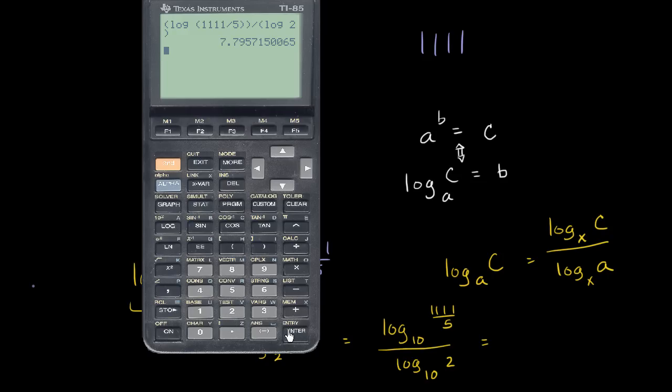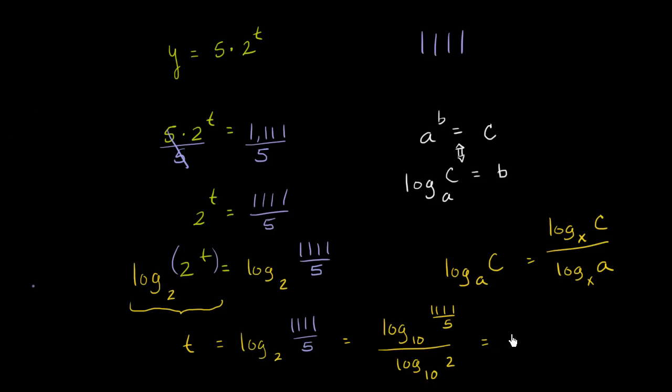And then that gives us seven, well, it just keeps on going. This is approximately equal to 7.796. So this is approximately equal to 7.796. So when t is roughly equal to that, you're going to have y equaling 1,111.